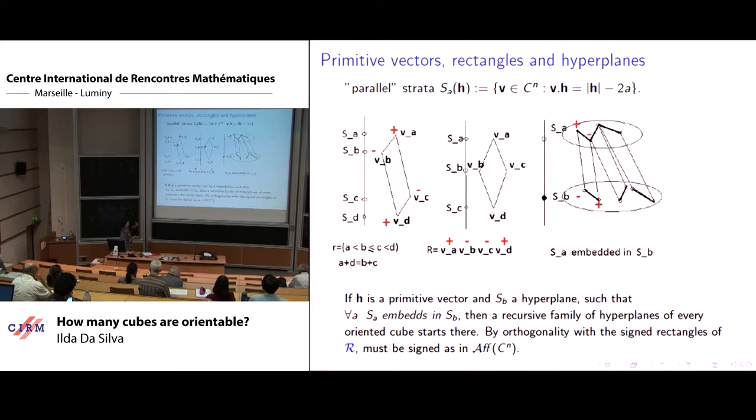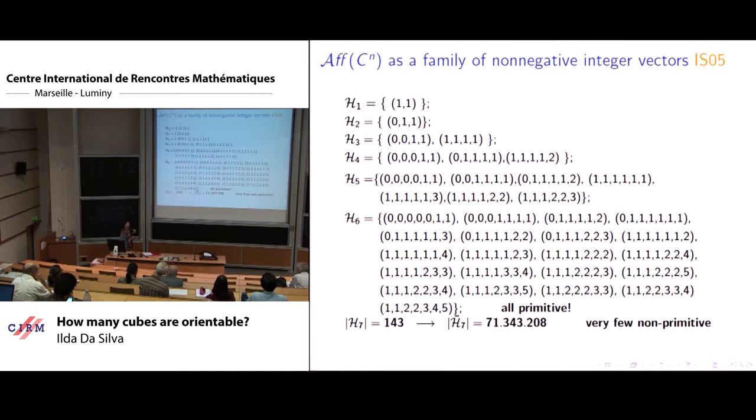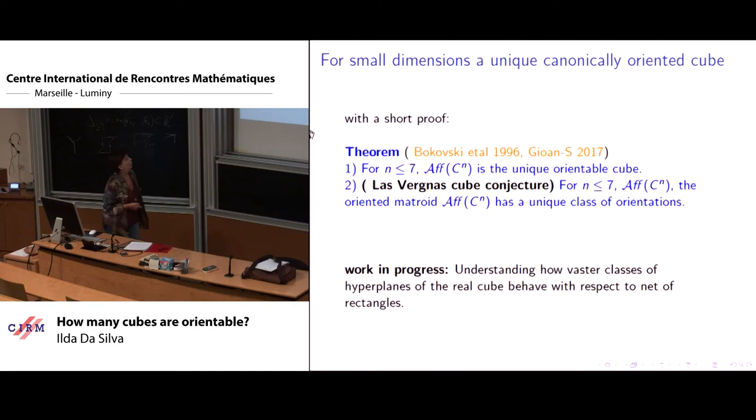This is actually, we can essentially prove that such family of hyperplanes must be in every orientable cube, and since the family of non-negative, this is the extended list of all the hyperplanes, and up till dimension six they are all primitive. So we can prove that up till six there is immediately there is just one oriented cube, which is actually the real cube. For seven, the very few are non-primitive, but the same argument applies. So even for seven this is true.